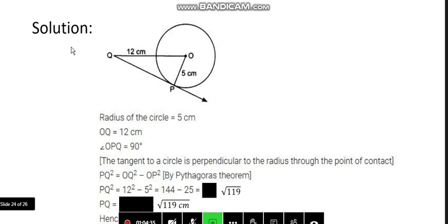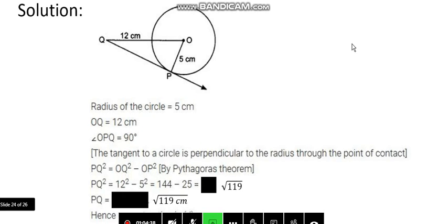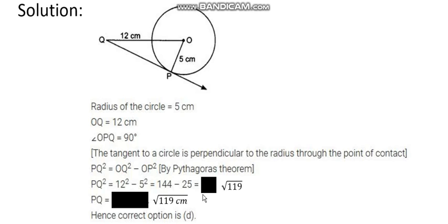So OQ is 12 centimeters, radius is given as 5. We know that at point P, the angle is 90 degrees because the radius is perpendicular to the tangent, and vice-versa.